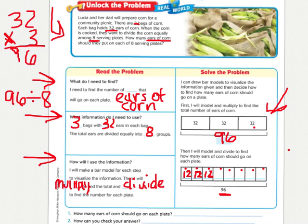So, it's hard for my pen to fill all these in, but each and every one of those boxes should have 12 in it. And so then, number 1 down here, how many ears of corn should go on each plate? 12 ears of corn will be on each plate.